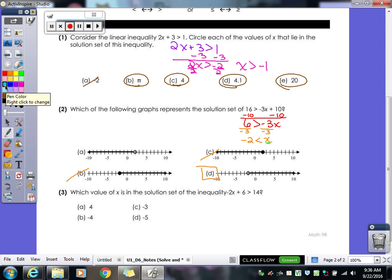Okay, third one. Which value of x is in the solution set of the inequality negative 2x plus 6 is greater than 14? So again, solve for x first. So we'll subtract 6. We get negative 2x is greater than 8. What will we divide by? Negative 2. So therefore, what happens to our inequality? It changes to less than, it does flip. Yep. So x is less than negative 4. So what's our answer?